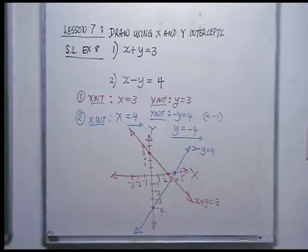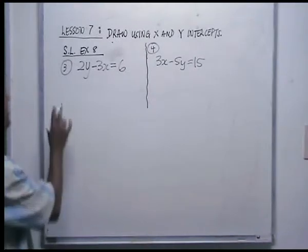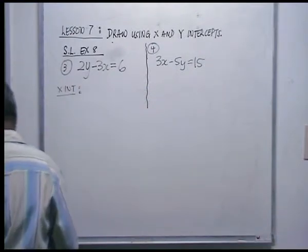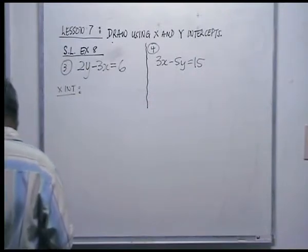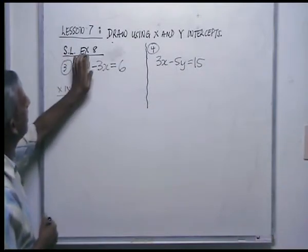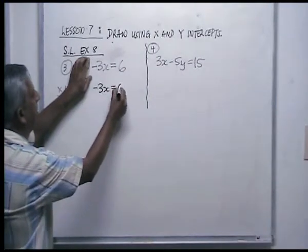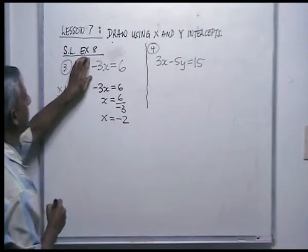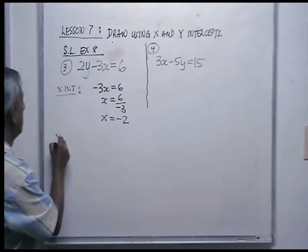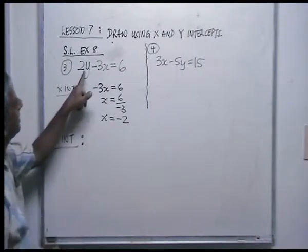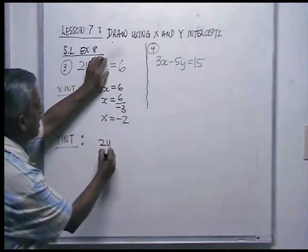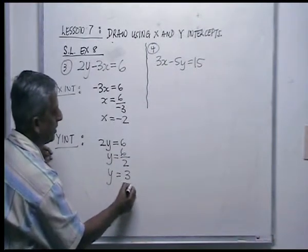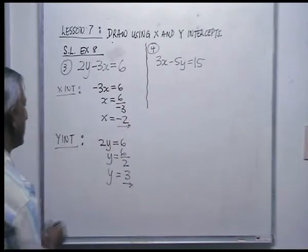Now let's look at number 3: 2y minus 3x equals 6. For the x-intercept, put y equal to 0, so minus 3x equals 6, giving x equals 6 over minus 3, which is x equals minus 2. For the y-intercept, put x equal to 0, so 2y equals 6, giving y equals 3. So the x-intercept is minus 2 and the y-intercept is 3.